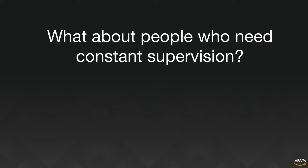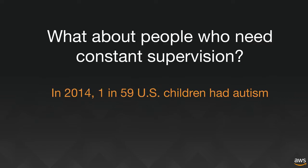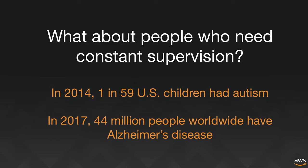What about people who need constant supervision? One child in 59 — almost 2% of US children — suffers from autism, and almost 50 million people worldwide have Alzheimer's disease. In both cases, patients need a lot of supervision and human assistance, and it's probably not possible to have a nurse or doctor helping those patients 24/7. It ends up being families trying to deal with this, and we know it's very difficult.